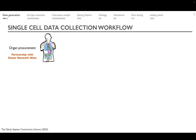As part of the Tabula Sapiens consortium, we partnered with Donor Network West, a non-profit that facilitates organ procurement for research organizations. Through Donor Network West we get access to donors that meet our criteria. The goal of Tabula Sapiens is to build as close as possible a healthy reference, so we have certain criteria for which organs to include in the atlas.